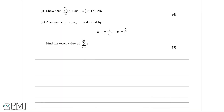This question is about series, so let's read and see what's going on. We need to show that the sum — the big Greek letter sigma — from r equals 1 to 16 of (3 plus 5r plus 2 to the power of r) equals 131,798.